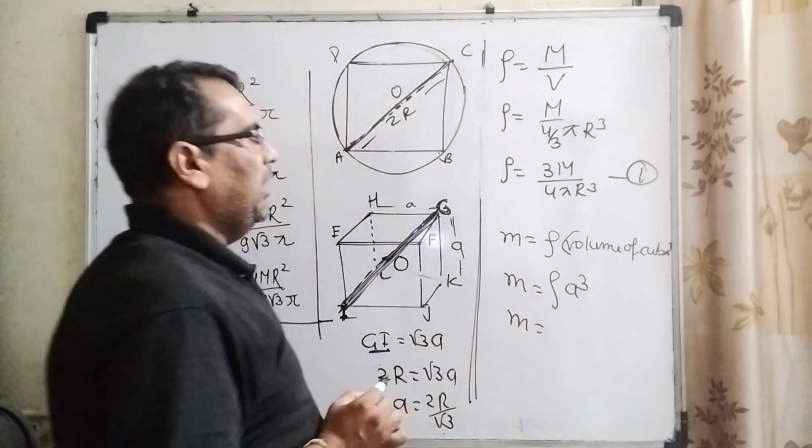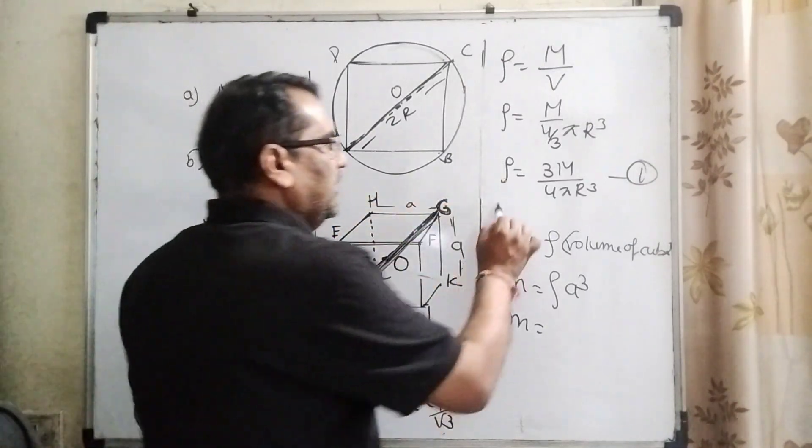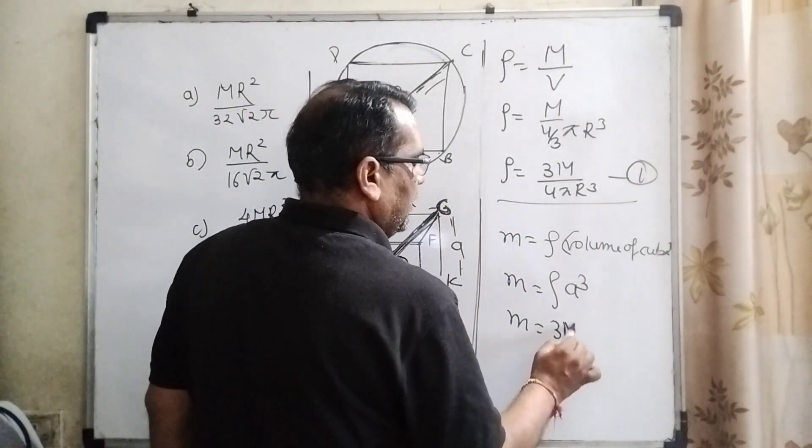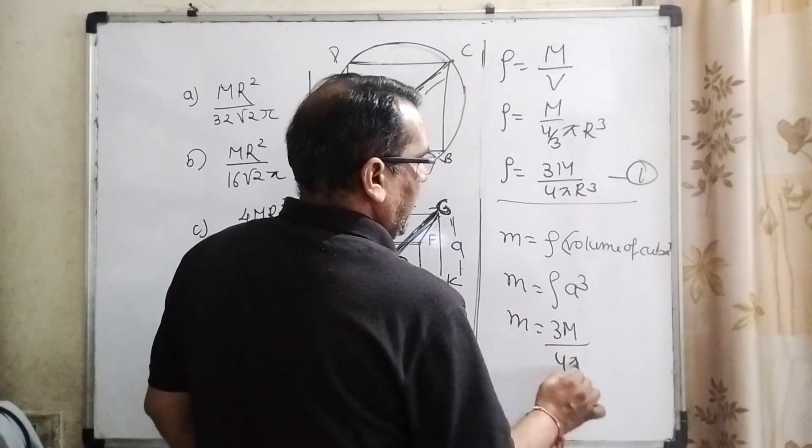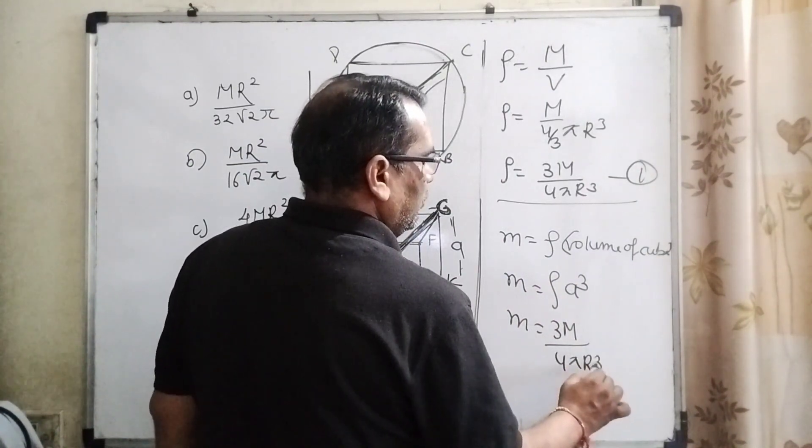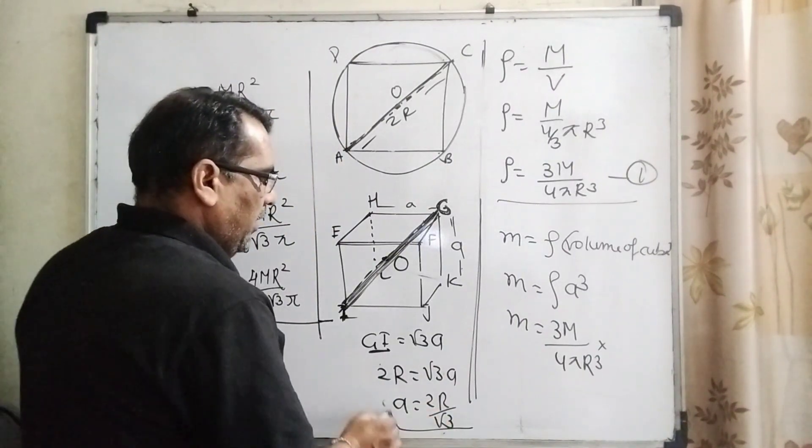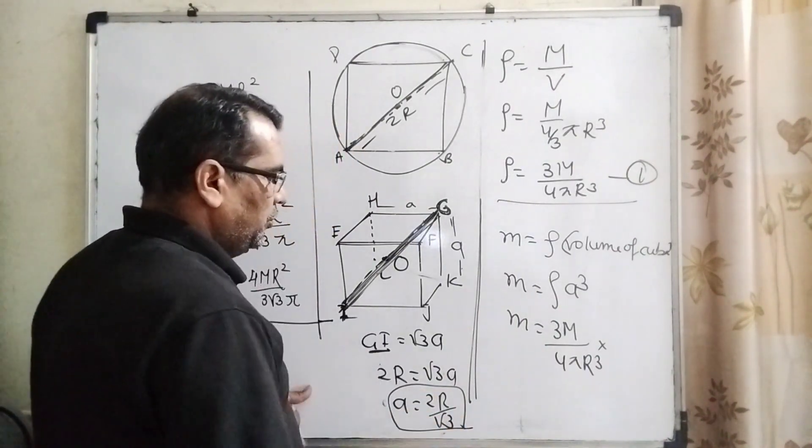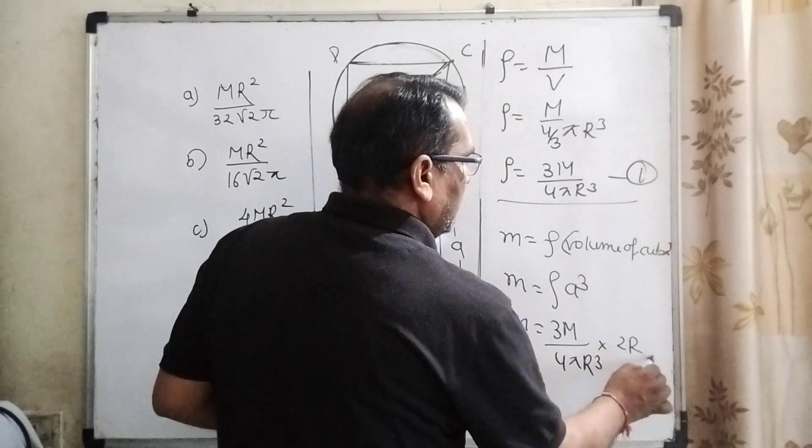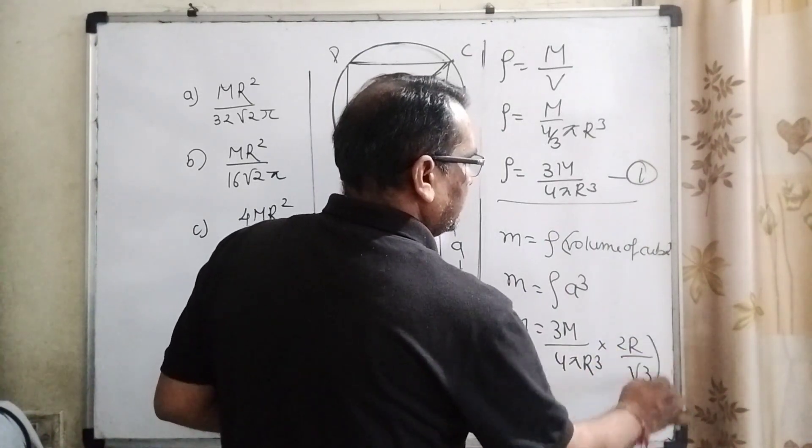And substitute the value of density from the first equation: (3M)/(4πR³). And what is the value of a? You have already found out a = 2R/√3, so a³ = (2R/√3)³.